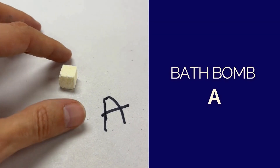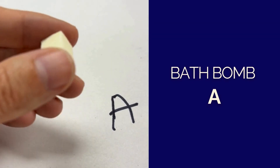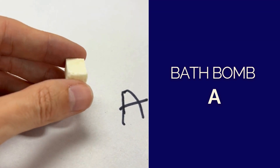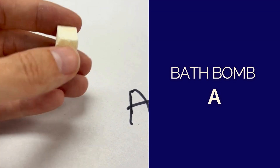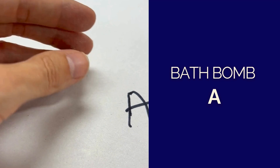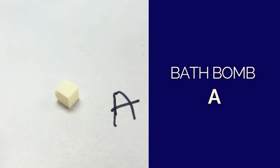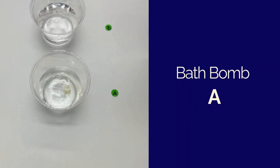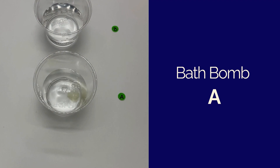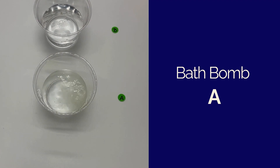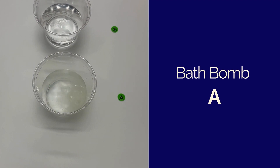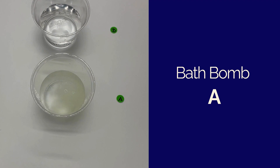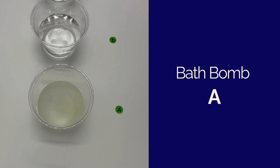Text reads: Bath Bomb A. A small off-white chalky cube sits on a table labeled A. It is picked up and placed into a cup of water labeled A. It begins to fizz. The water becomes cloudy and is filled with small bubbles.